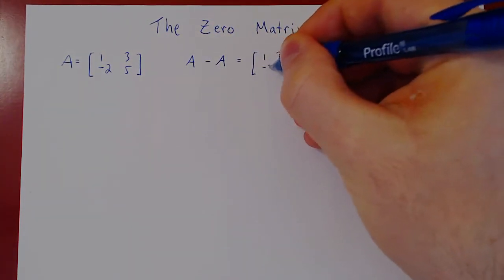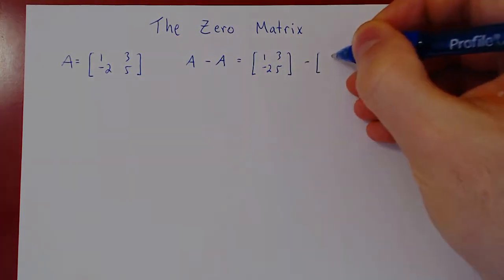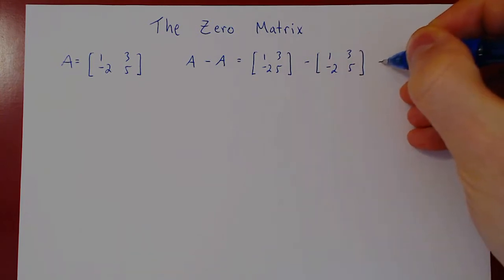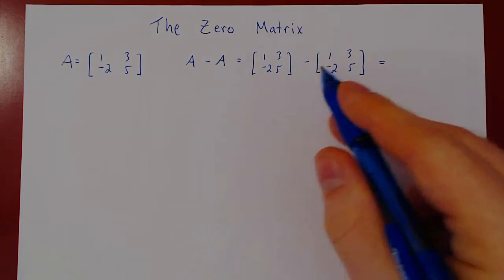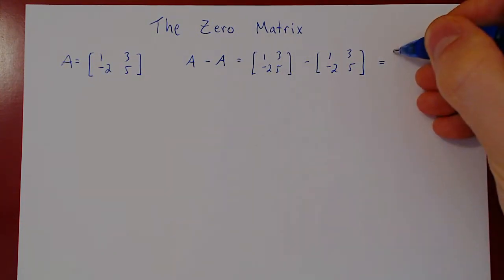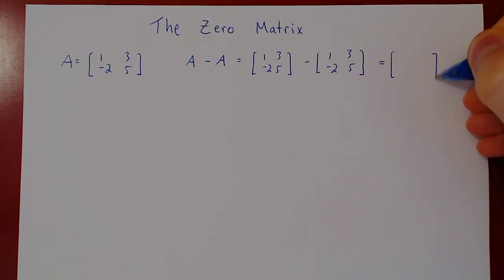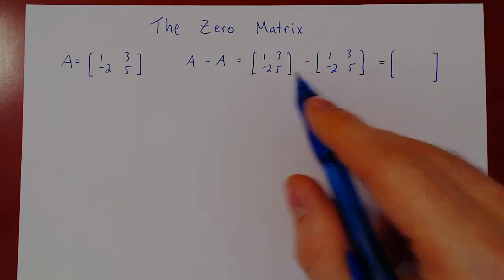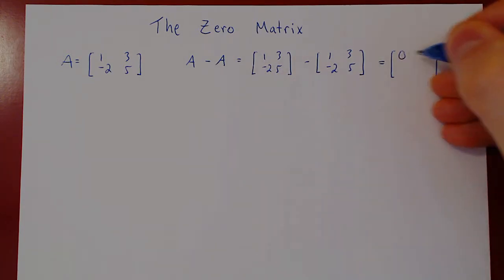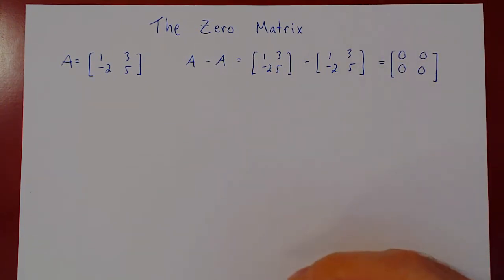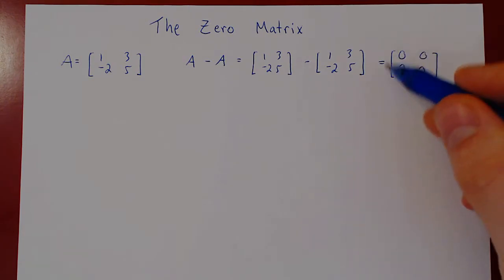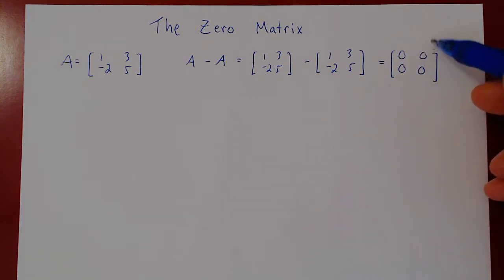Well, 1, 3, negative 2, 5, minus itself. 1, 3, negative 2, 5. When we subtract matrices, we subtract corresponding entries. This will still be a 2 by 2 matrix, but since all corresponding entries are the same, every entry of the subtraction will be equal to zero. And so what we have is a matrix where every single entry is zero, and we call this the zero matrix.